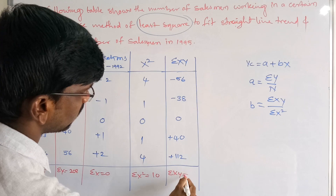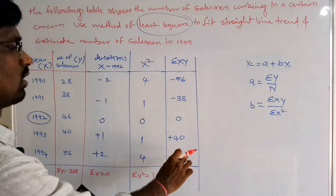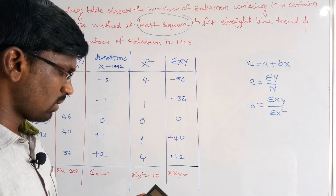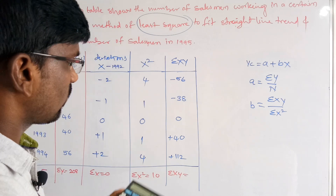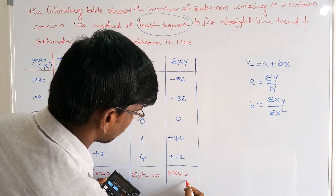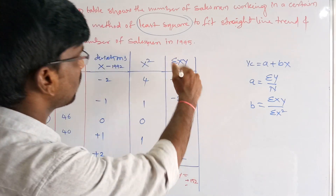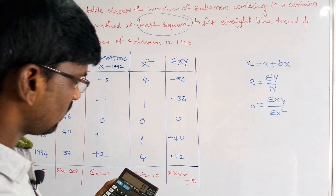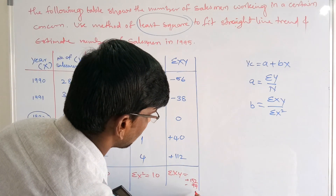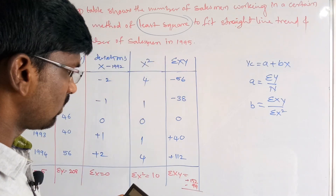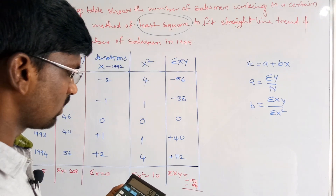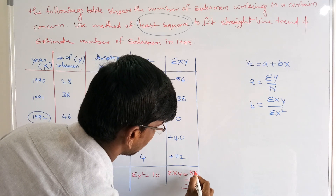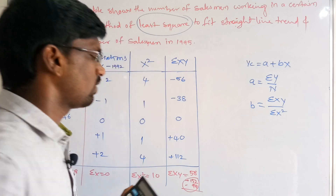For summation of xy: the positive values are 112 + 40 = 152, and the negative values are 56 + 38 = 94. The difference between positive and negative values gives summation of xy = 152 - 94 = 58.